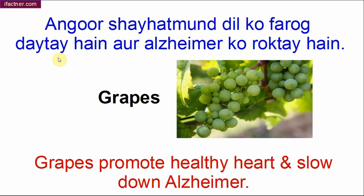Aage hamare paas angoor — kaale angoor bhi ho sakte hain, green angoor bhi. Angoor sehat-mand dil ko farogh dete hain aur Alzheimer ko rokte hain. Alzheimer budhape mein aata hai jab hum cheezein bhoolna shuru karte hain. Research ne sabit kiya hai ki angoor uske liye achhe hote hain. Grapes promote healthy heart and slow down Alzheimer.